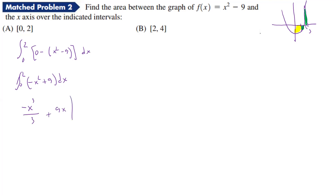Plugging in x = 2: 2³ = 8, so we get -8/3 + 18. Plugging in zero gives zero. So the result is 18 - 8/3, which equals 46/3, or approximately 15.333. That's our answer for the first interval.